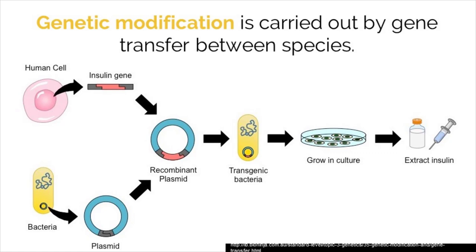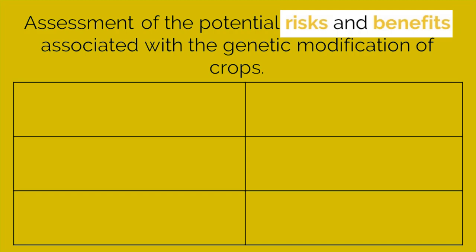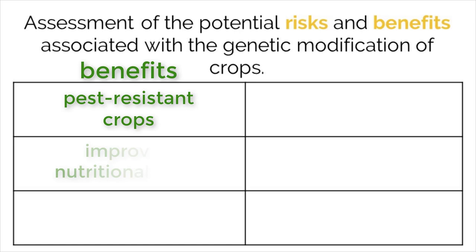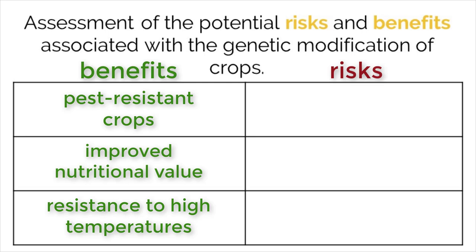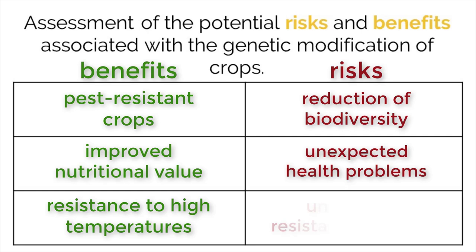The process of genetic modification is also seen heavily in the agricultural industry, in which crops are being introduced to traits from other organisms. Like all advancements in technology, we need to understand and consider the inevitable risks and factors. A few benefits of GM crops include pest-resistant crops, improved nutritional value, and resistance to high temperatures. A few risks include reduction of biodiversity where GM crops are grown, mutation of transferred genes causing unexpected health problems, and cross-pollination could lead to unintended resistance in weeds. The use of GM crops is still being debated by many groups, so make sure you have knowledge of both sides of the argument for the IB exam.